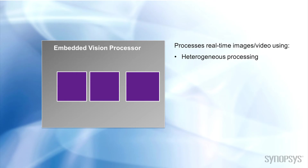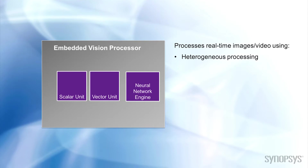To support both control and extensive math processing, embedded vision processors are designed with a heterogeneous architecture. In other words, for power efficiency, they include different processing units to perform different tasks.